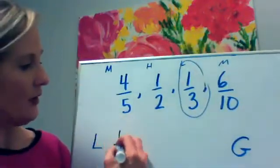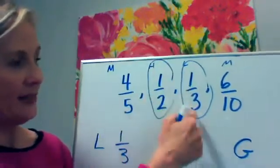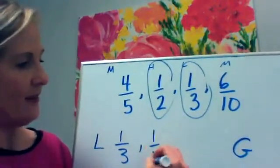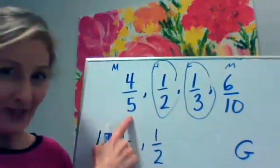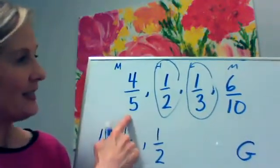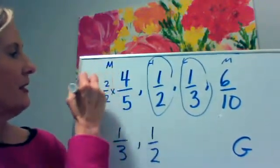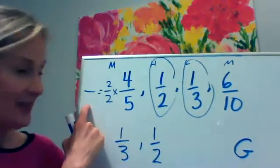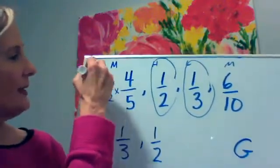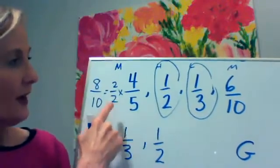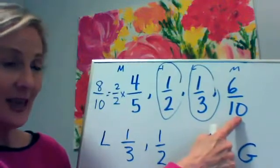I know the absolutely least or smallest amount is going to be one third. I know the next one will be less than half, and then half. So my battle is really just between six tenths and four fifths. I can easily make an equivalent fraction for four fifths with tenths in the denominator — that will be eight tenths. So I found out that four fifths is actually a larger amount than six tenths.